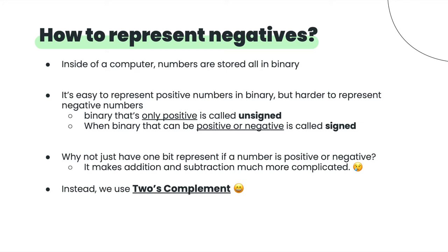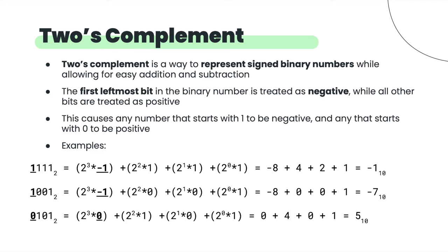One simple idea is to just have one bit at the beginning to say whether it's positive or negative. But the problem is that when we get to adding and subtracting numbers, that makes the computation more confusing. Additionally, there would be two zeros — a positive zero and a negative zero — which doesn't really make sense.